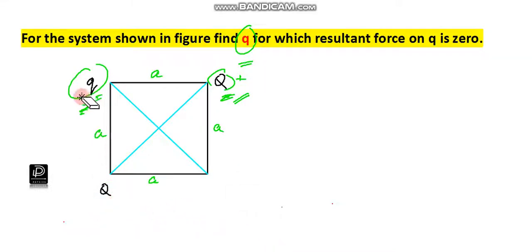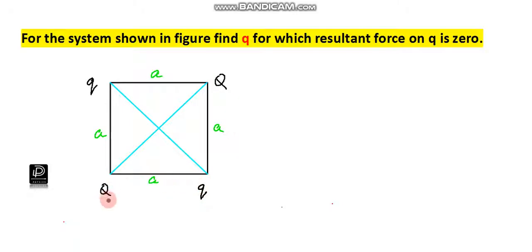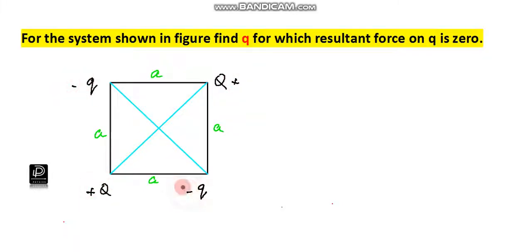Therefore, if you want to get the net force on small q equal to zero, then capital Q and small q must be of opposite sign. Please remember that. So I will consider capital Q as positive and small q as negative.